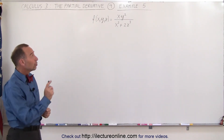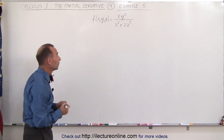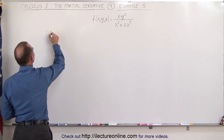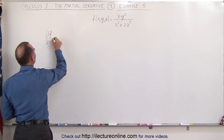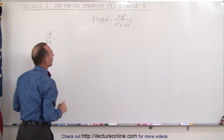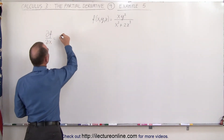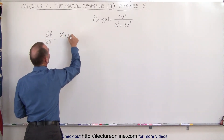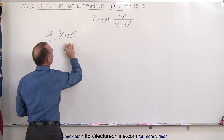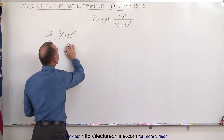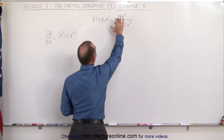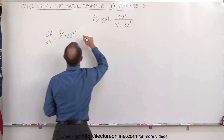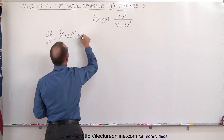Notice we're going to have to use the quotient rule here. First, the partial of the function with respect to x. Take the denominator, x squared plus 2 times z cubed, times the derivative of the numerator with respect to x. Since x is a variable, y squared is a constant, this simply becomes y squared.